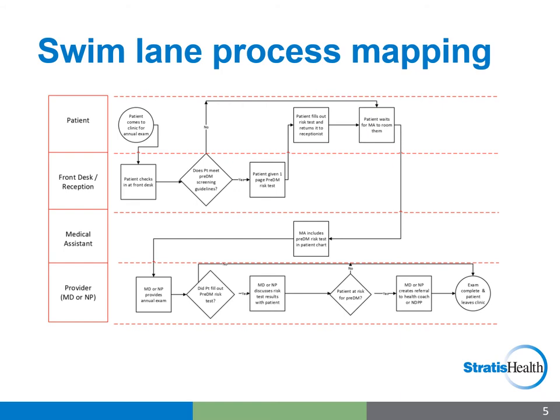This is an example of a process contained within a single organization, and the process map helps us understand which roles — the boxes in the left-hand column — are responsible for particular steps related to the pre-diabetes screening. Imagine if this process map did not include swimlanes; it would be much more difficult to identify the who of who does what when.